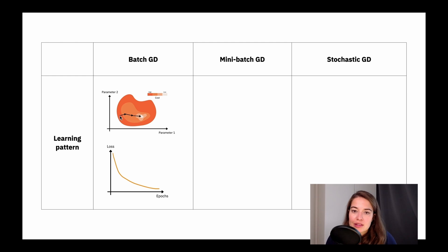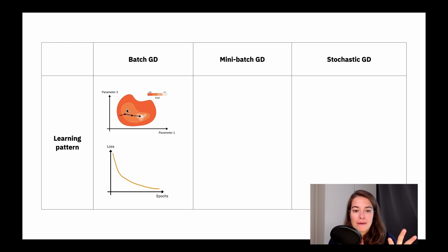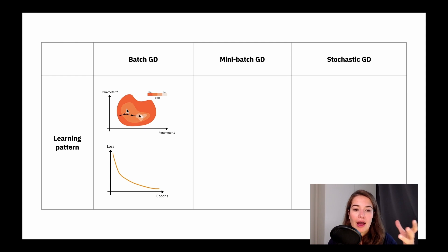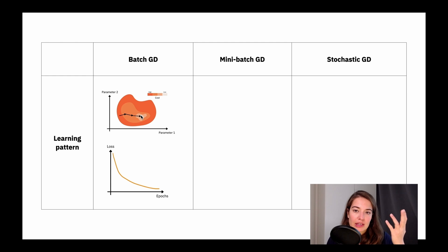Say we start with parameter one and parameter two initialized at some point. With batch gradient descent, we can see the whole cost landscape — how parameter one and parameter two affect cost across all examples. So it can clearly see which direction has lower cost, and that's why it's able to find the minimum reliably.